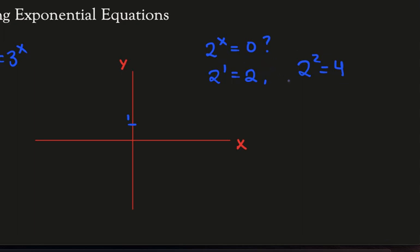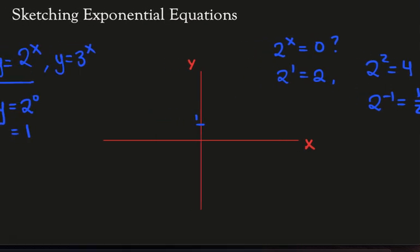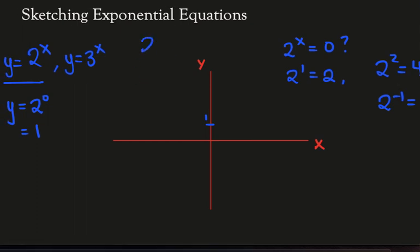So maybe let's try something negative. Let's try 2 to the negative 1. Well, by index laws, that's just 1 half, and that's greater than 0 as well. So what we'll find is that 2 to the power of x is always positive. So 2 to the x is greater than 0 for all x. So there isn't, in fact, an x-intercept. We'll have an asymptote along the x-axis at y equals 0.